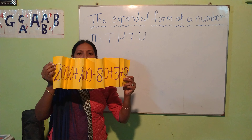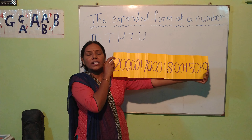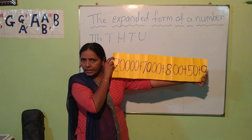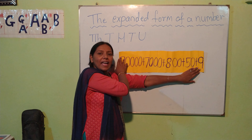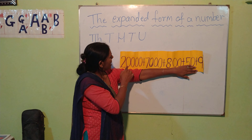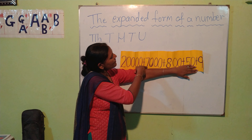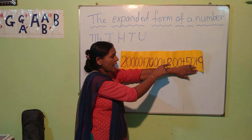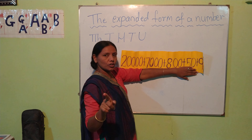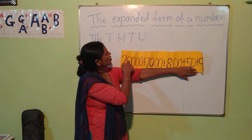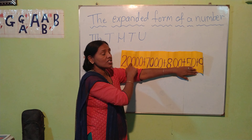Can you see the numbers over here? I will read for you all. We have the numbers which we have expanded — means we have stretched it. Here we have 20,000; then we have 7,000; then 800; then 50 and 9. After 2, there are 4 zeros, so in all this is a 5-digit number — that means 10,000 place. So 20,000.